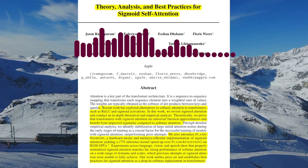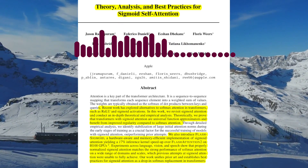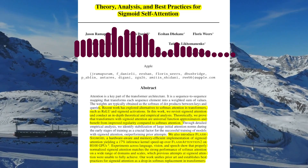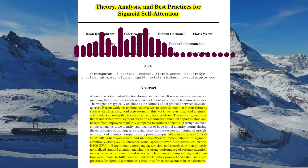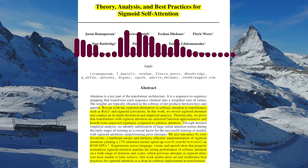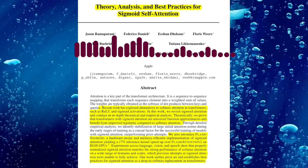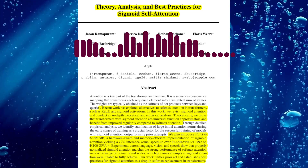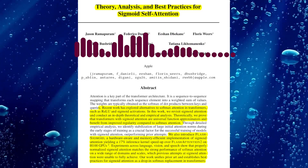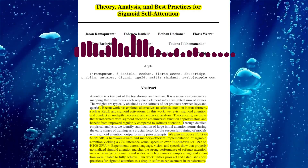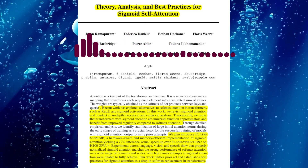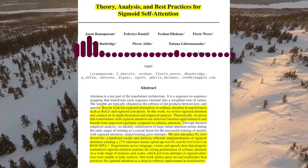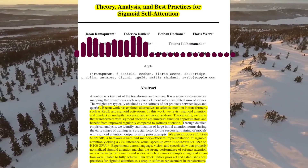So the theoretical analysis suggests that sigmoid attention could be a viable alternative to softmax attention. But what about the practical implications? The paper presents extensive empirical results across various domains, including language modeling, image classification, and speech recognition. They find that properly normalized sigmoid attention can match the performance of softmax attention on a wide range of tasks and scales. However, they also identify some challenges in training models with sigmoid attention, particularly the issue of large initial attention norms.